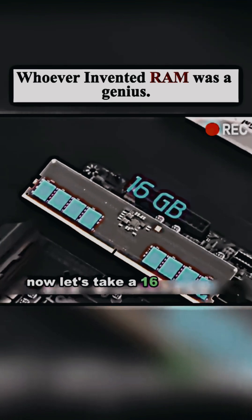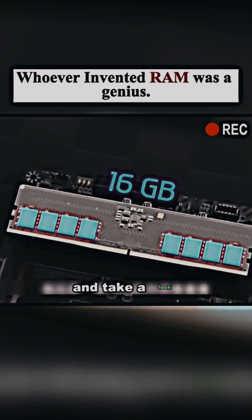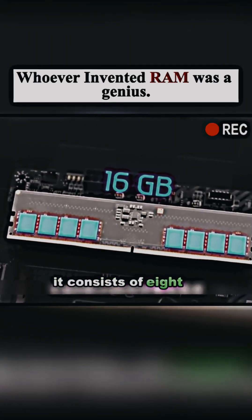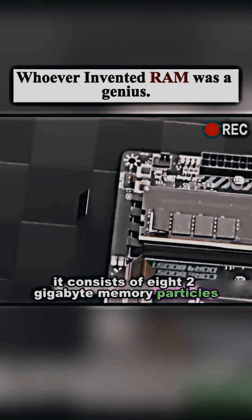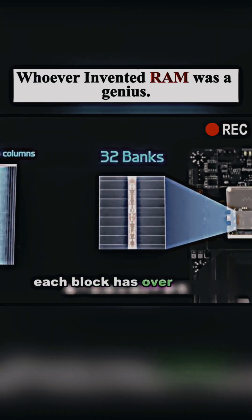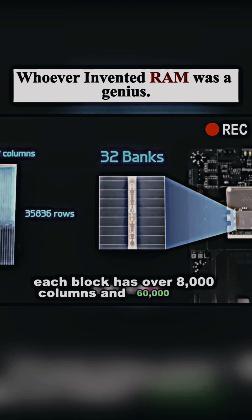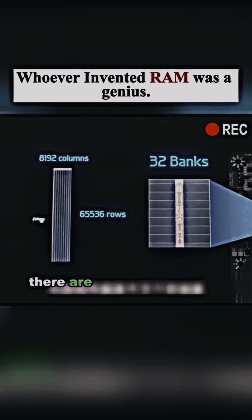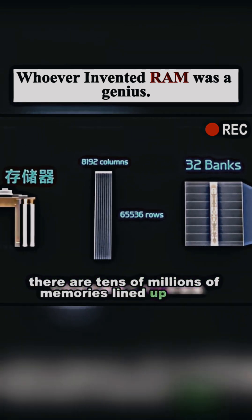Now let's take a 16 gigabyte memory stick and take a look. It consists of eight 2 gigabyte memory particles. Each particle has 32 memory blocks. Each block has over 8000 columns and 60,000 rows. There are tens of millions of memories lined up inside.